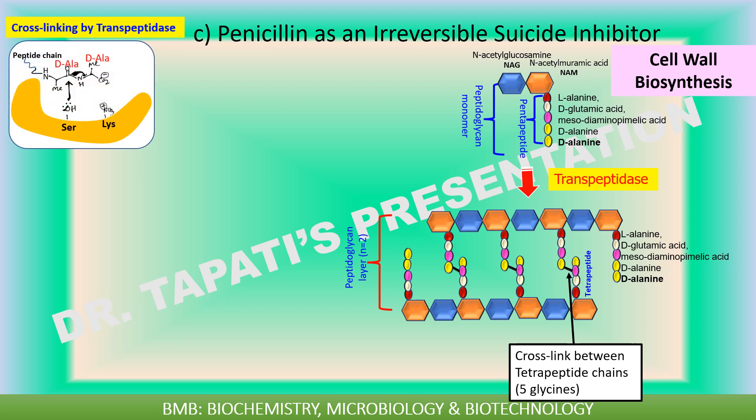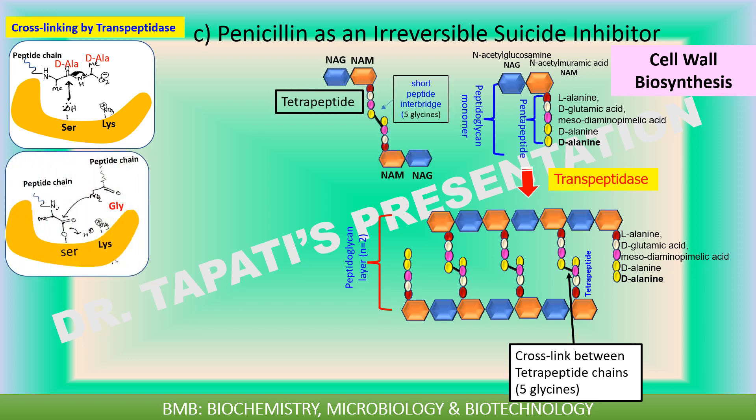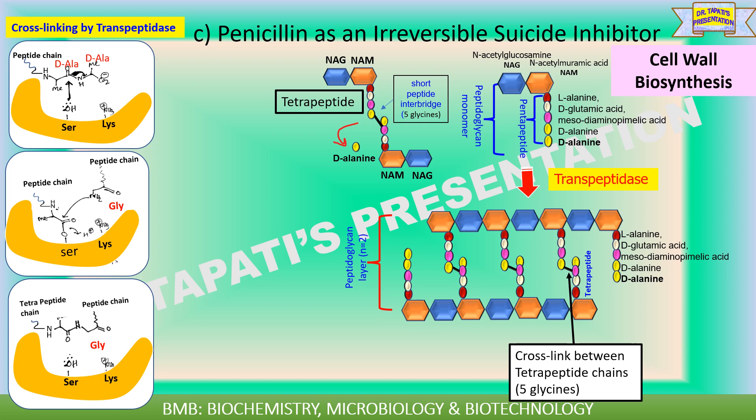The cross-linking mechanism by transpeptidase involves formation of a short peptide interbridge consisting of five glycines. In the process, the terminal D-alanine is cleaved from the pentapeptide to form a tetrapeptide in the peptidoglycan. In this way, cross-linking is carried out in the bacterial cell wall by the action of transpeptidase enzyme.